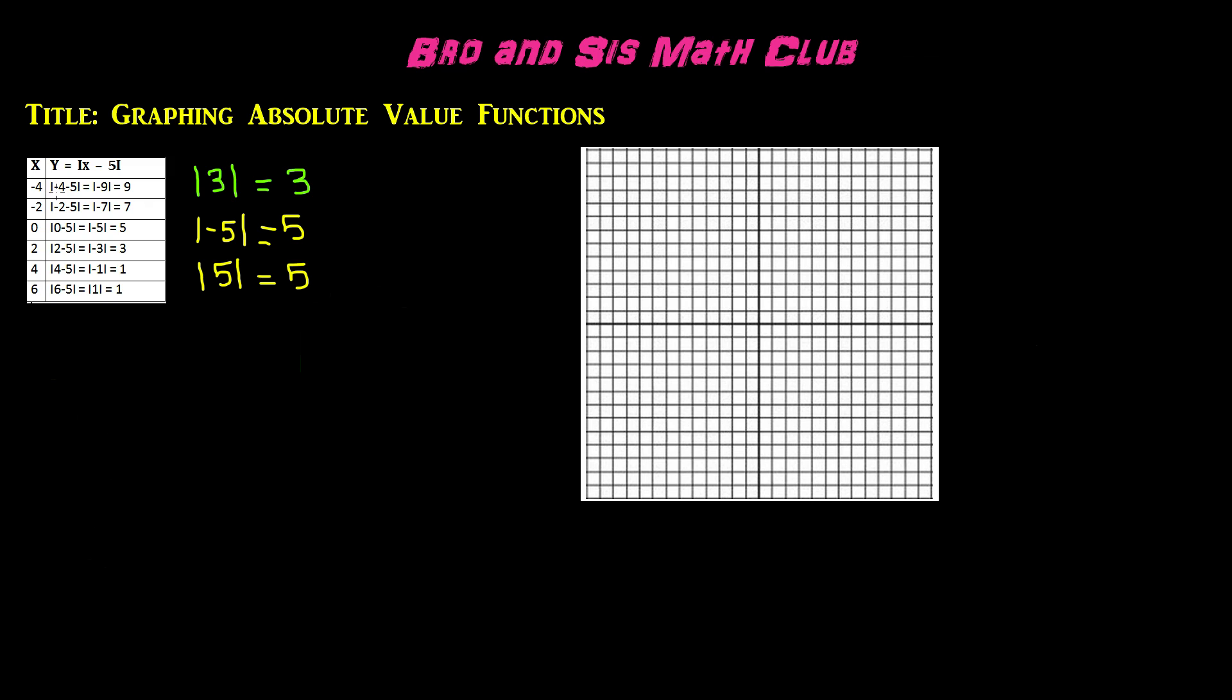The first step to find the y values is to substitute the value of x into the function. We got the absolute value of negative 4 minus 5, which we know is going to be the absolute value of negative 9, since negative 4 minus 5 is negative 9. And we know that the absolute value of any negative number is the positive version of that same number. So, the absolute value of negative 9 would be positive 9. The first coordinate is going to be negative 4 and positive 9.